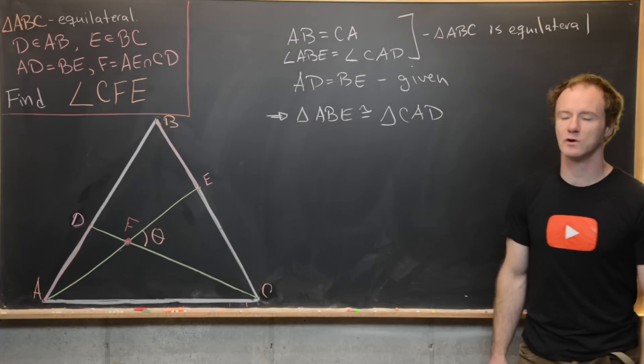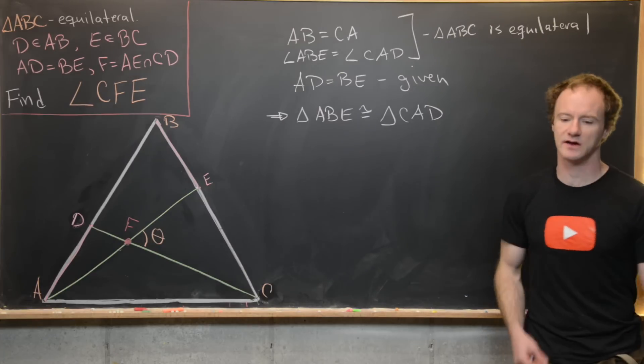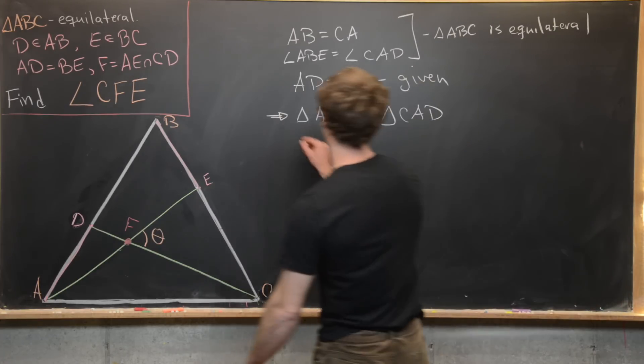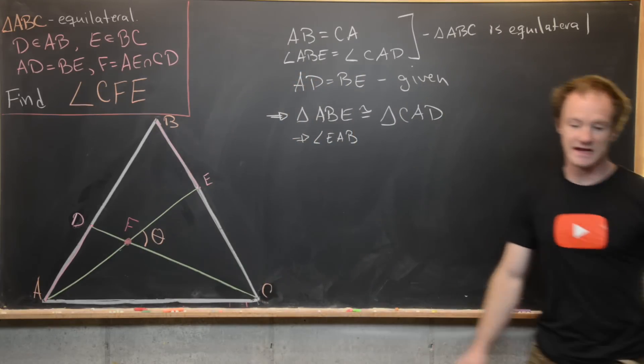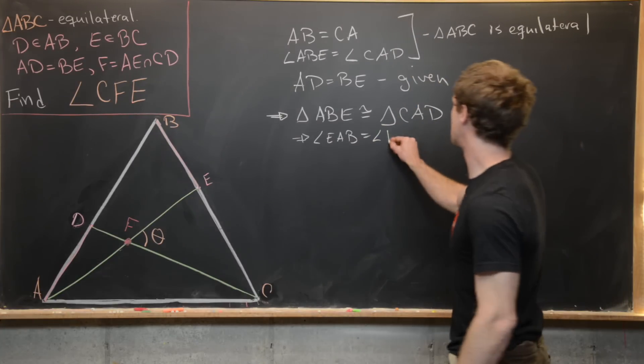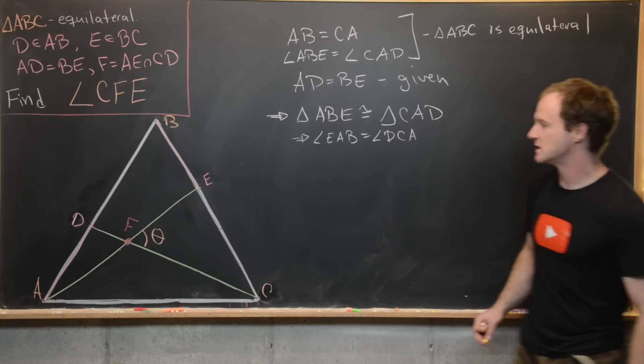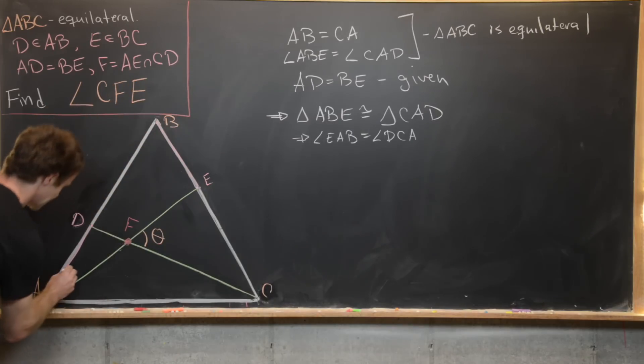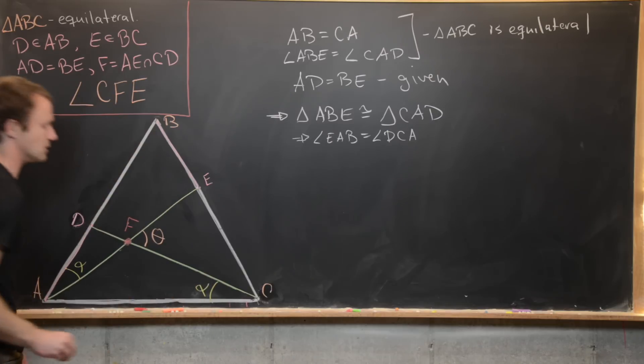Now we can extract some more information out of this, so we know that all of the component angles and sides of these two triangles have to be congruent. In particular, this tells us that angle EAB is equal in measure to angle DCA. So let's maybe put those on the board in yellow. So EAB, that's going to be like this angle right here, so maybe I'll name that alpha. And then DCA, so that's going to be down here, that is also angle alpha.